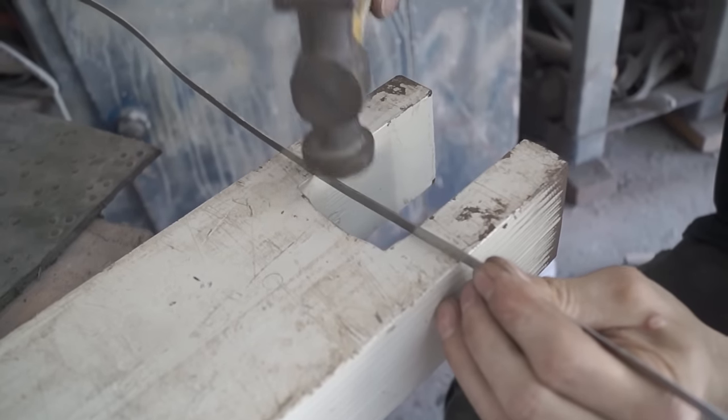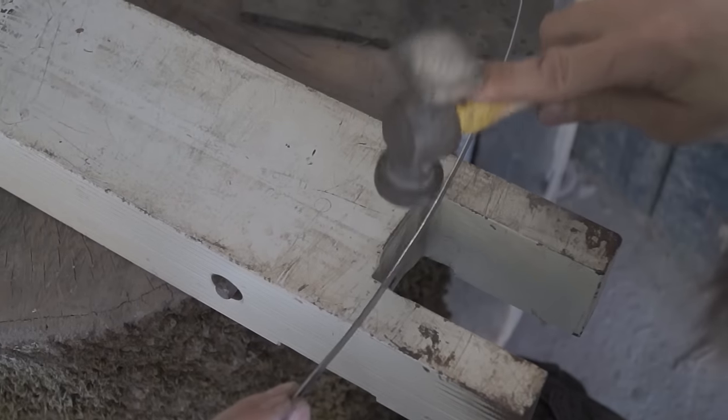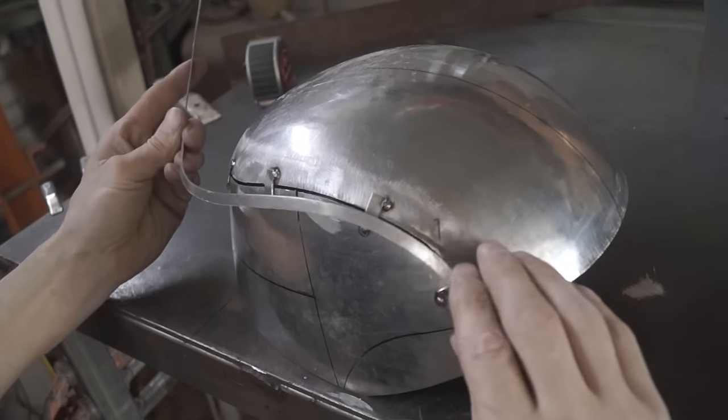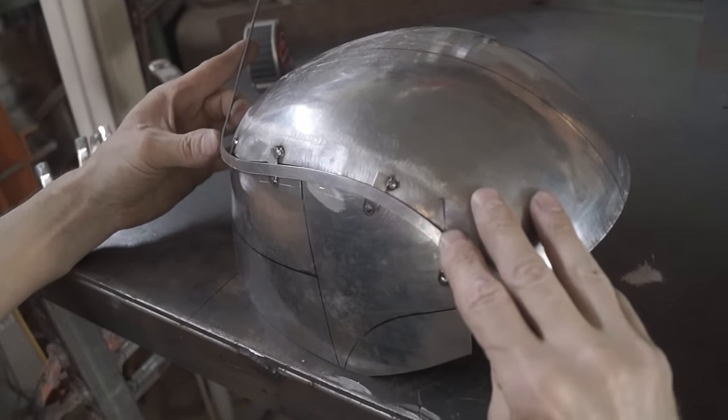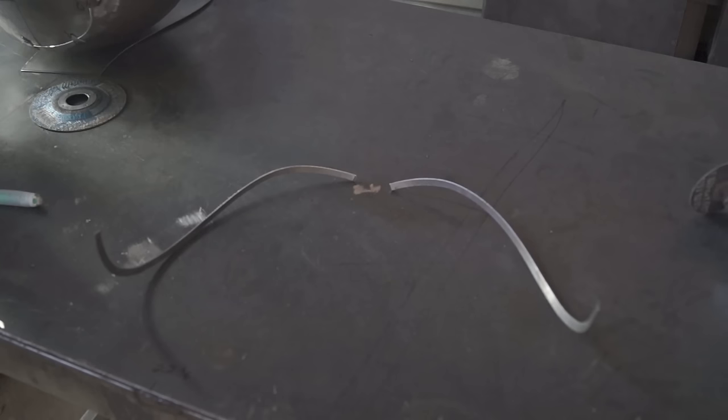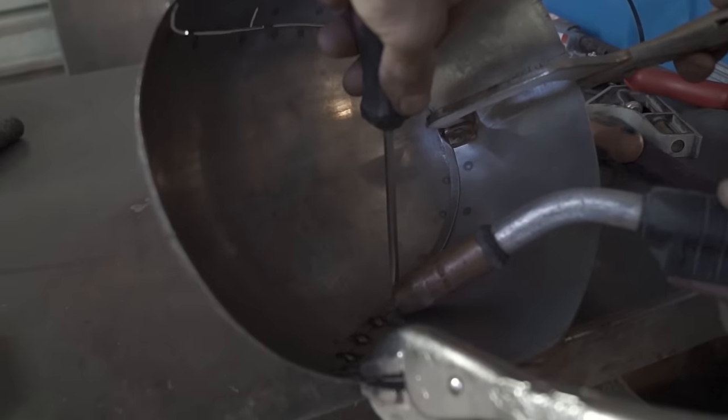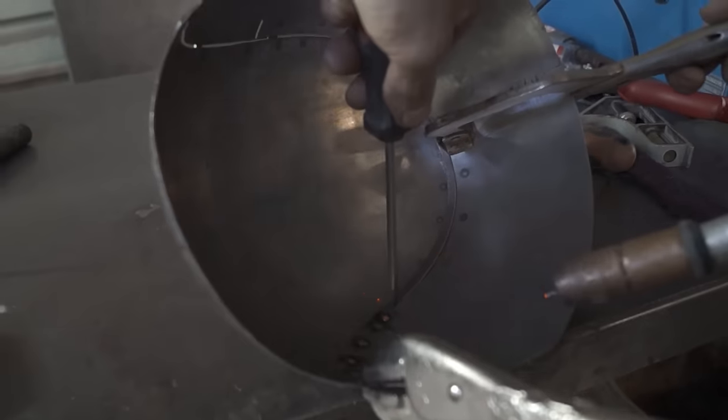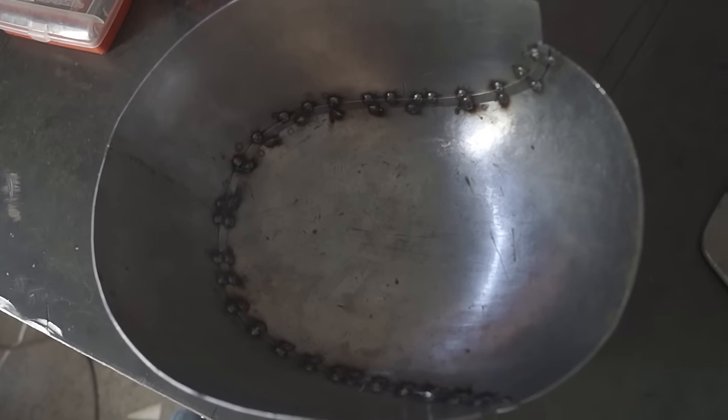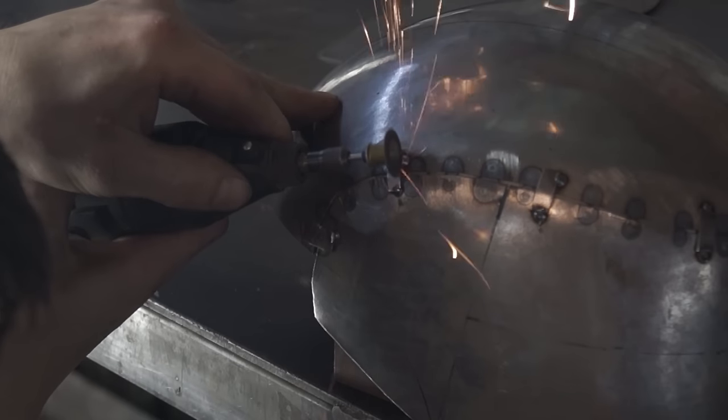Next, I shaped a filler piece that I attached on the inside of the helmet. Now that I got the filler piece welded into place, I cut away the temporary tab.